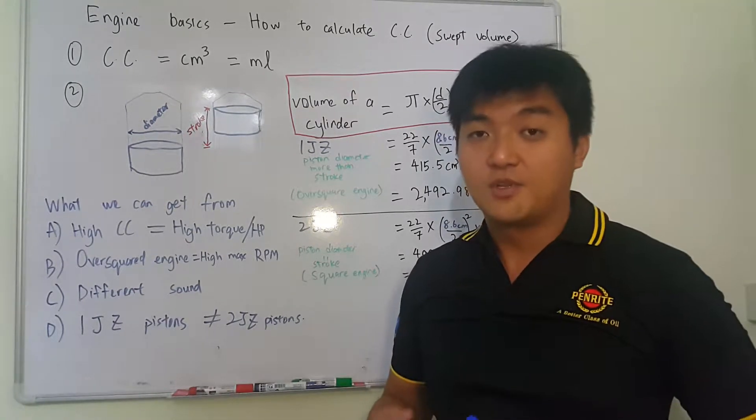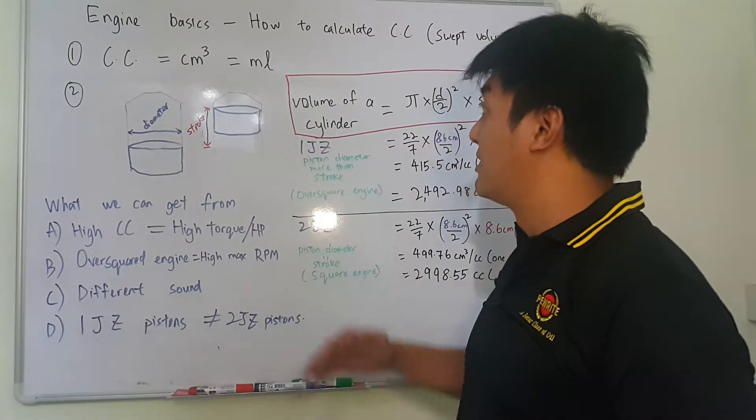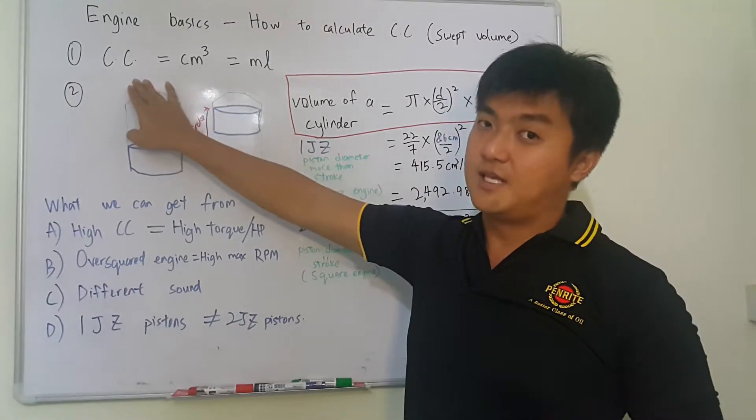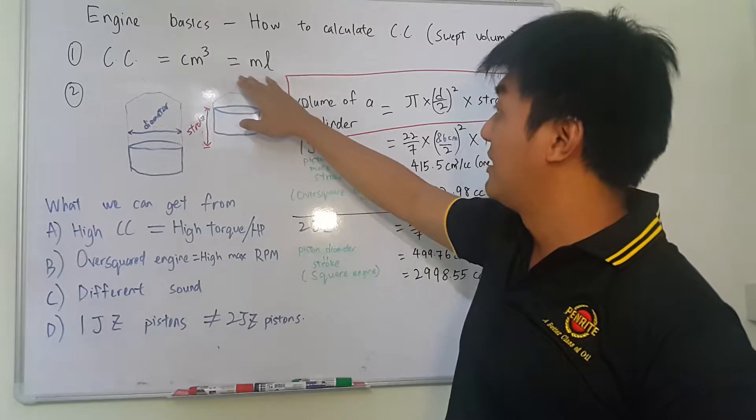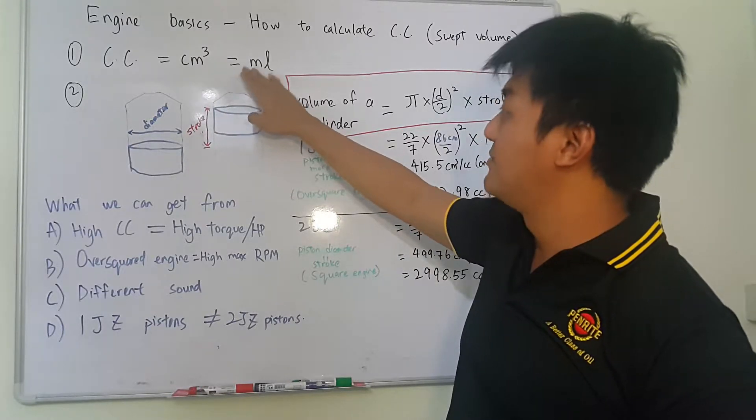Okay, so first we need to understand some of the terms so that we can calculate it. What is CC stands for? CC is cubic centimeter, that means cm³, which is the same as milliliter.